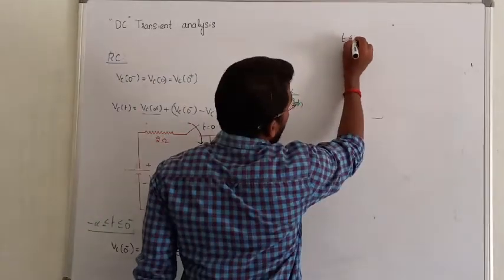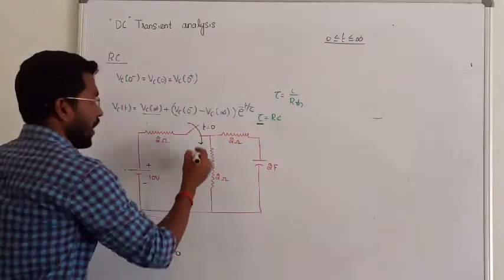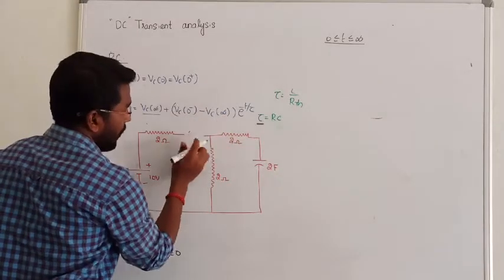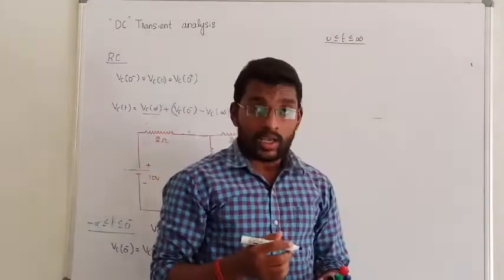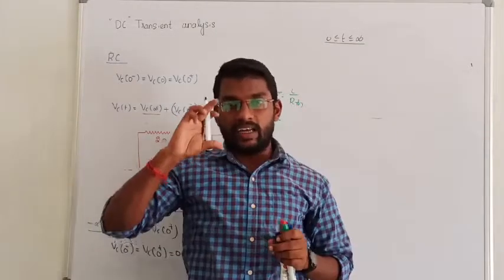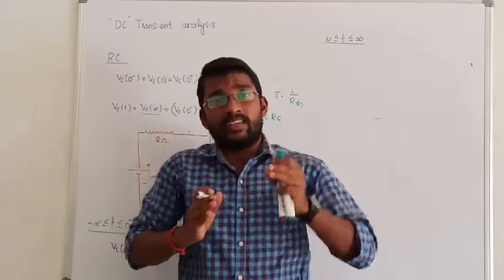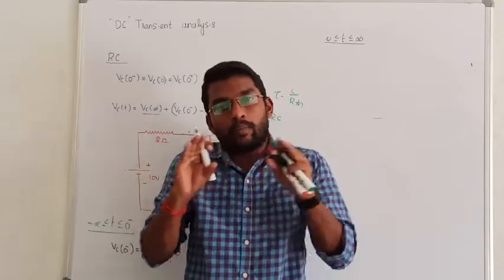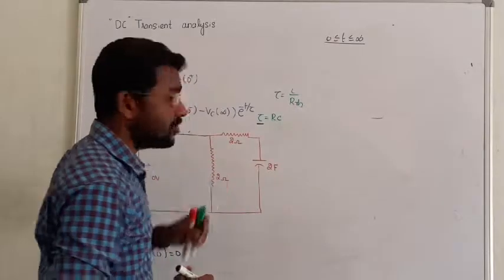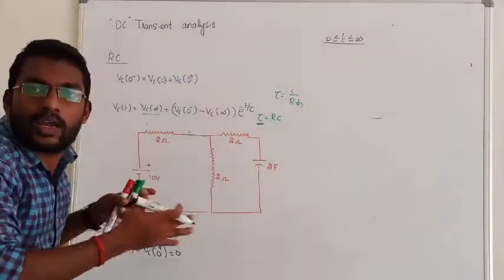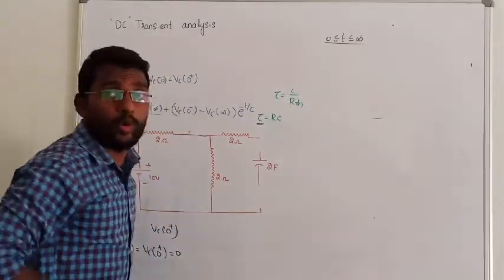After operating the switch, from 0 to infinity, we are going to close the switch. Once it is closed, it will be a short circuit. If your capacitor is connected with a DC supply for a long duration, then the capacitor is effectively an open circuit in steady state.